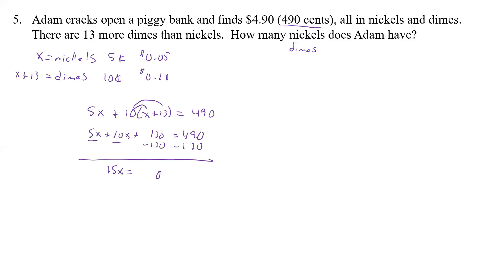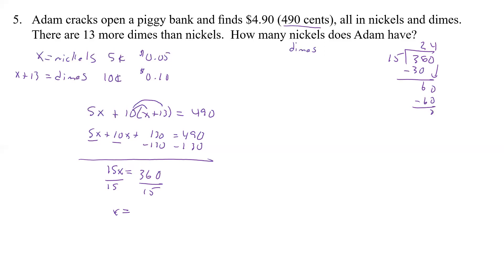5X plus 10X gives us 15X. Subtracting 130 from 490 gives us 360, so 15X equals 360. Dividing both sides by 15: 360 divided by 15. That gives us 24. So X equals 24 nickels.